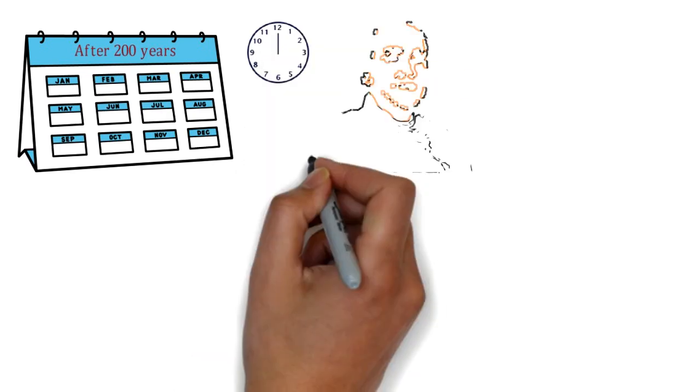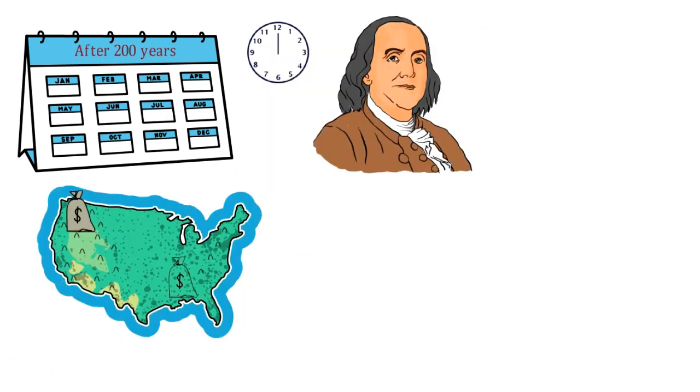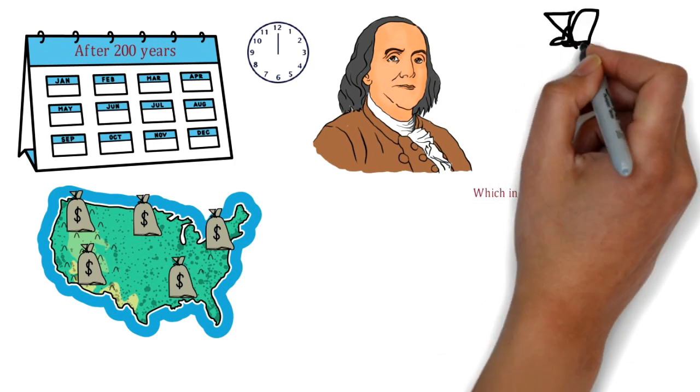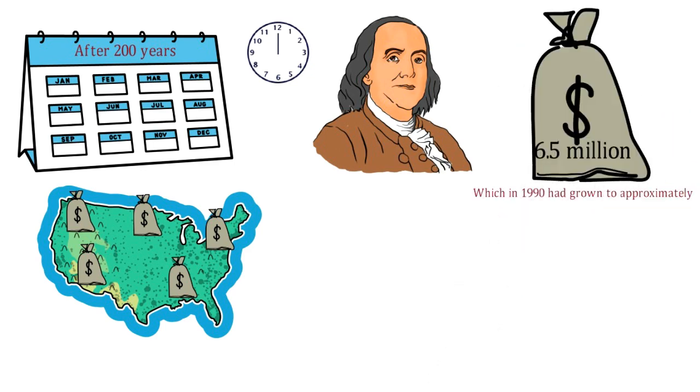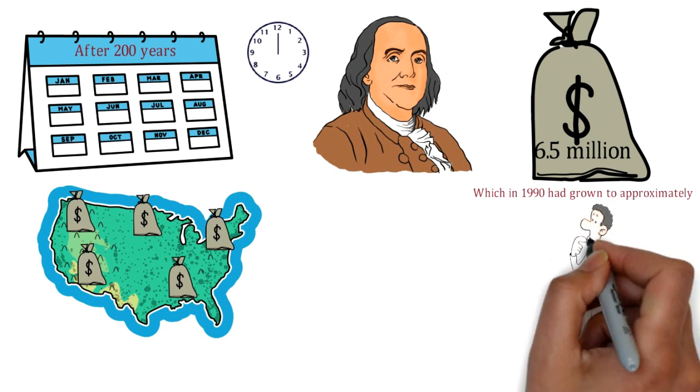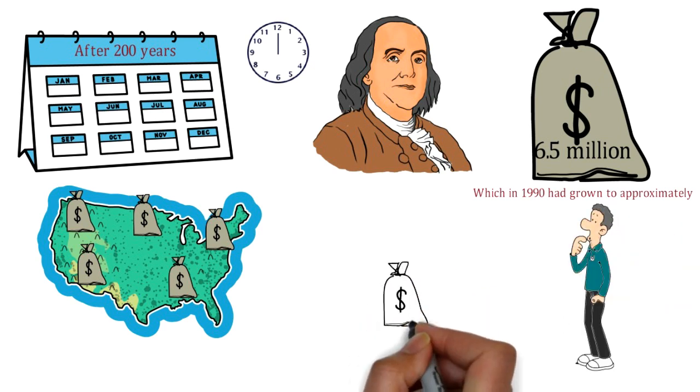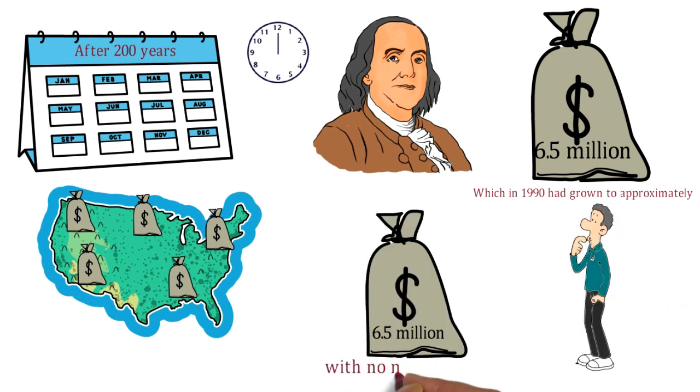Finally, 200 years after Franklin's death, each city would receive the balance which in 1990 had grown to approximately $6.5 million. Imagine how $1,000 grew to 6.5 million with no money added all over those years.